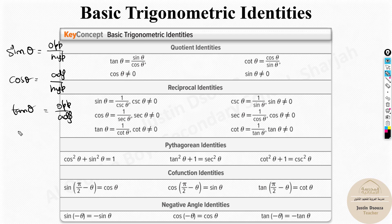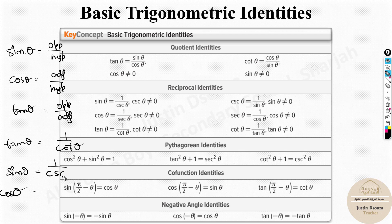For the reciprocals: tan θ = 1 / cot θ, or cot θ = 1 / tan θ. For sin and cos, the reciprocal of sin is cosecant (csc), and the reciprocal of cos is secant (sec). A memory trick: if it starts with S, the reciprocal starts with C-S (cosecant); if it starts with C, the reciprocal starts with S (secant).